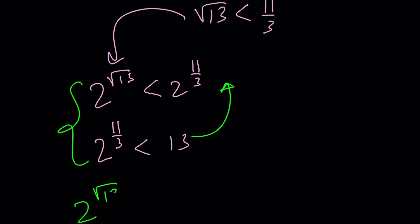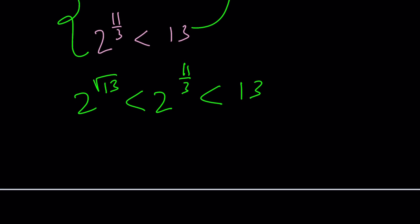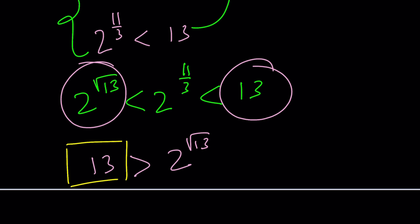So, you get 2 to the power root 13 is less than 2 to the power 11 thirds, and that's less than 13. And we're trying to compare these two numbers. So, now 13 is greater than 2 to the power root 13. And since we were looking for the larger number, 13 is the winner.